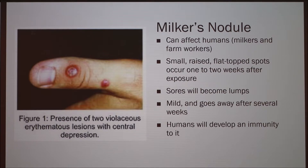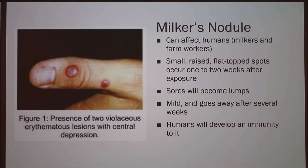The spots will start out looking almost like warts, and then they'll harden and become lumps. These lumps are very mild but they can cause some pain and discomfort. There is really no treatment for it — they just go away on their own after a few weeks. Humans can gain immunity to it, so once you get it, hopefully you don't get it again.